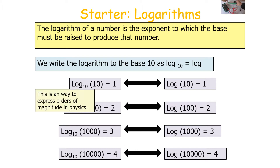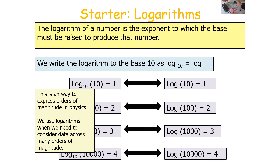This is a way we can use to express orders of magnitude in physics. We can use logarithms when we need to consider data across many orders of magnitude — going from 10 to 10,000 becomes just 1 to 4, instead of spanning the full range up to 10,000.